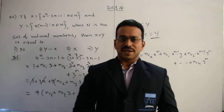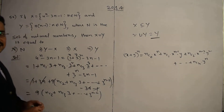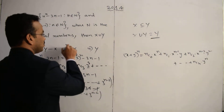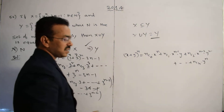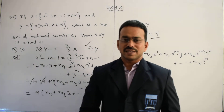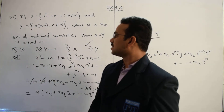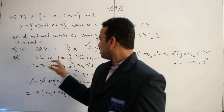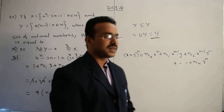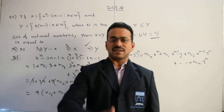Comparing with the given options: option 1 is N — incorrect. Option 2 is Y minus X — incorrect. Option 3 is X — incorrect. Option 4 is Y — this is the correct option. The key concept used was the binomial theorem: 4^n minus 3n minus 1 is written as (1+3)^n minus 3n minus 1, applying the (x+y)^n expansion. Thanks for watching, all the best.